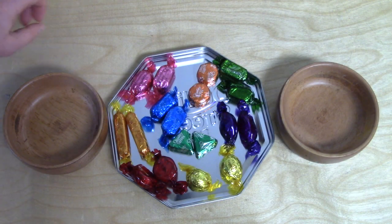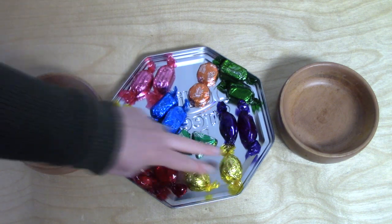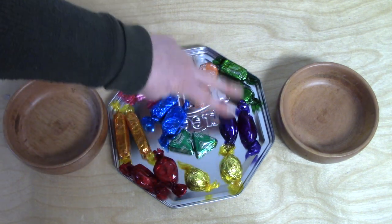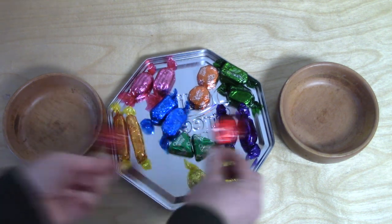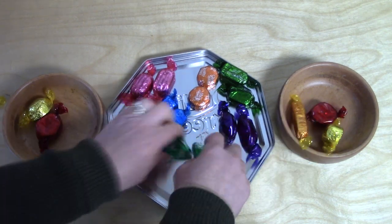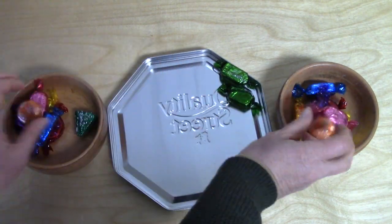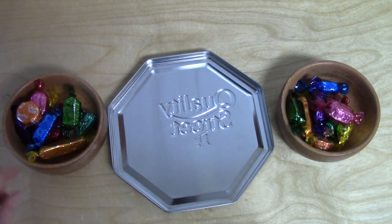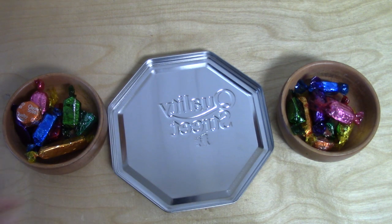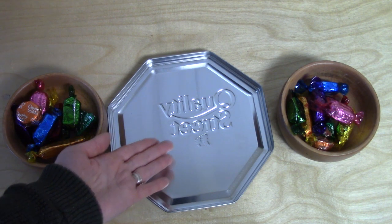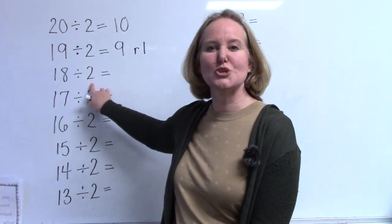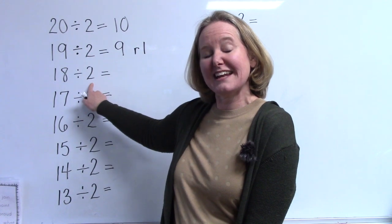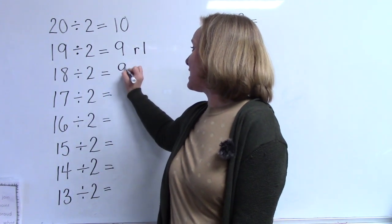Now I have eighteen candies. Two, four, six, eight, ten, twelve, fourteen, sixteen, eighteen. We're going to divide those eighteen candies into two bowls. One, two, three, four, five, six, seven, eight, nine. There are nine candies in each bowl. How many are remaining? None. We just divided eighteen candies into two bowls, and how many went in each bowl? That's right — it was nine.